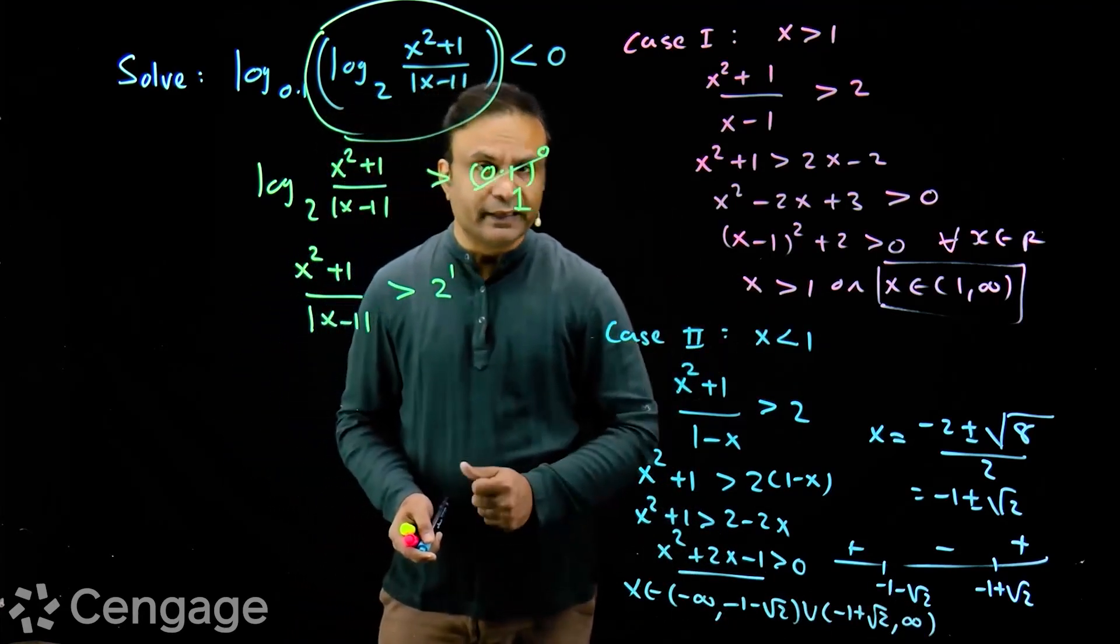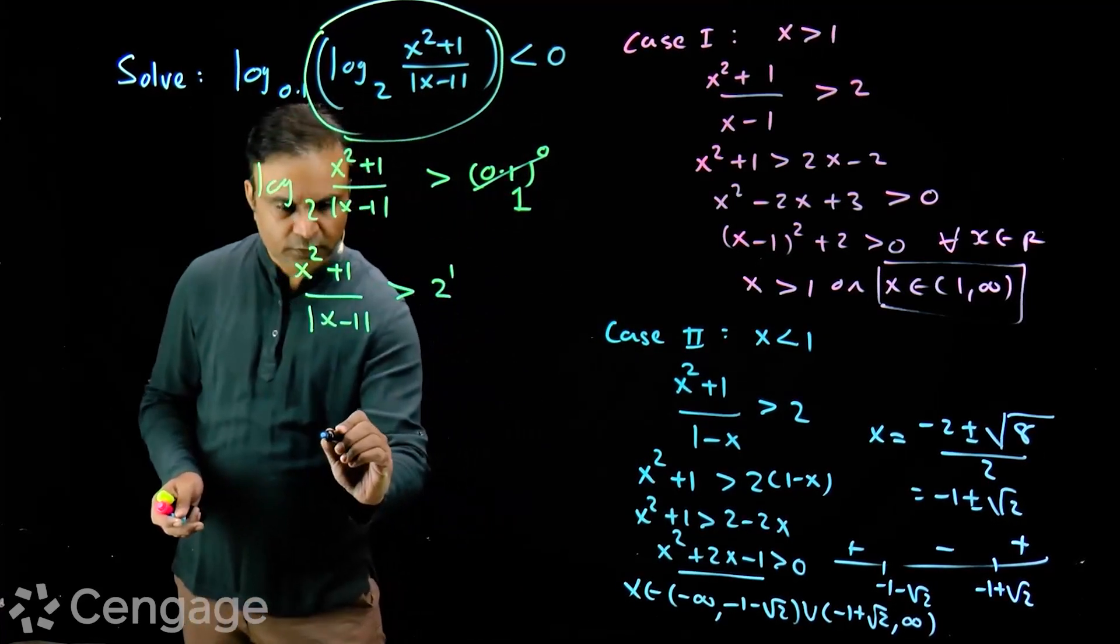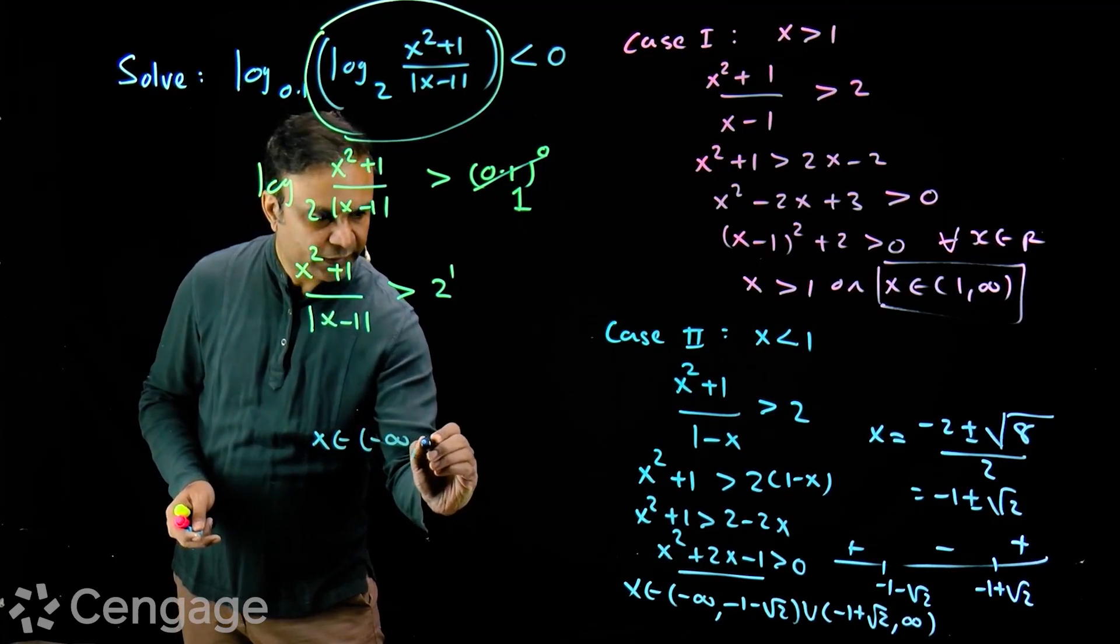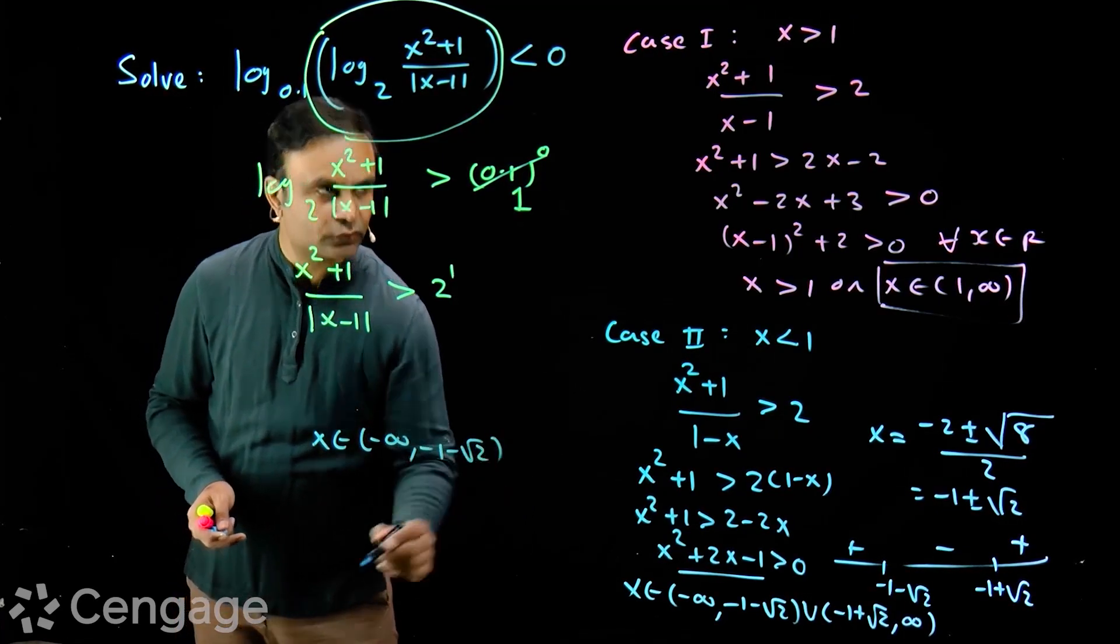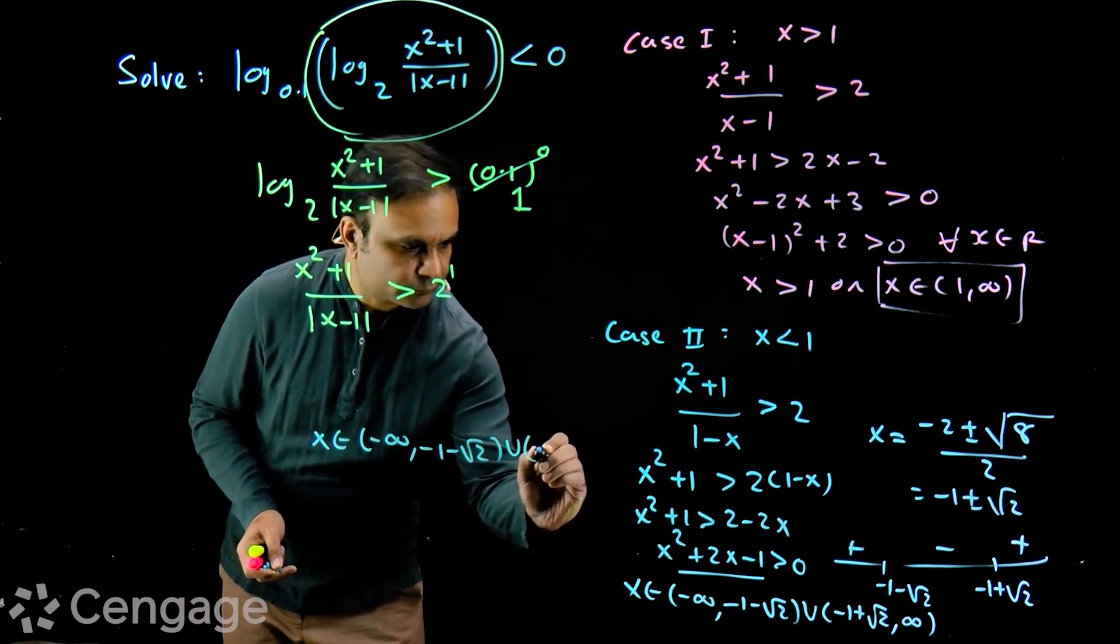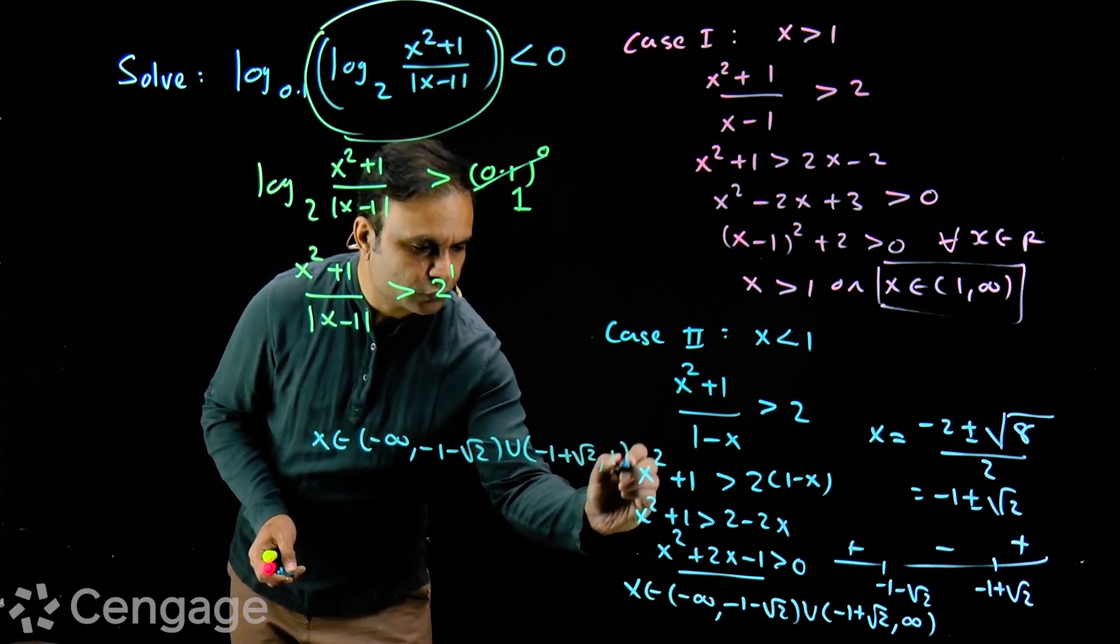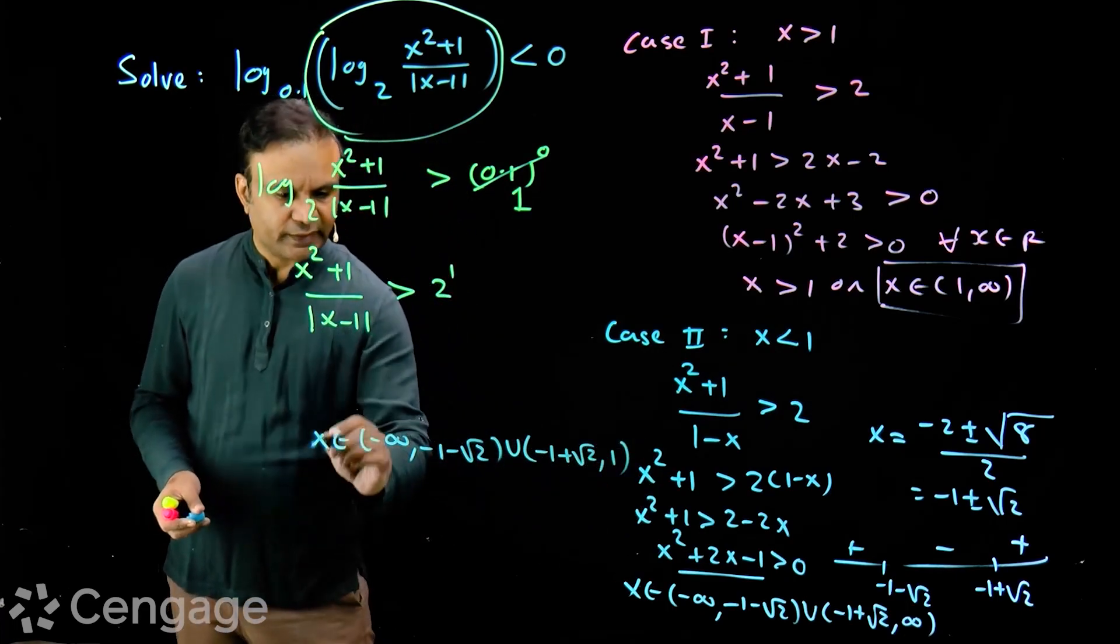But x is less than 1. So we have these values of x. What will be values of x? x belongs to minus infinity to minus 1 minus root 2 union minus 1 plus root 2 to 1 because x is less than 1.